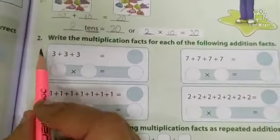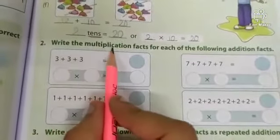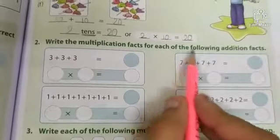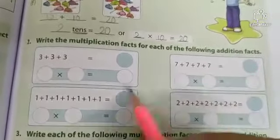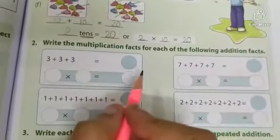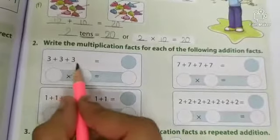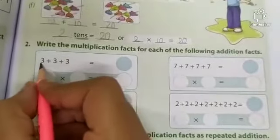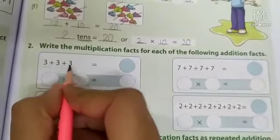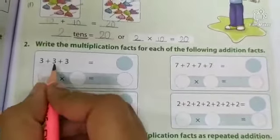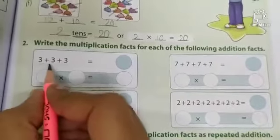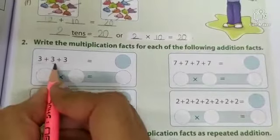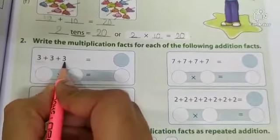So write the multiplication facts for each of the following addition facts. We have to write the multiplication facts for these addition facts. Like 3 plus 3 plus 3. Add 3 plus 3 plus 3. 3 plus 3 is equal to 6 and 6 plus 3 is equal to 9. 9.